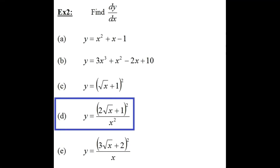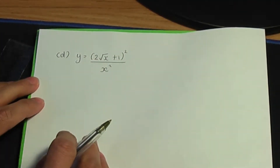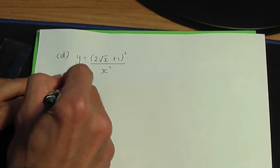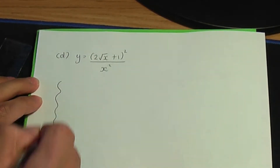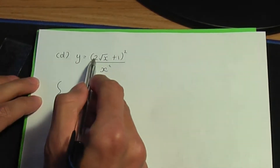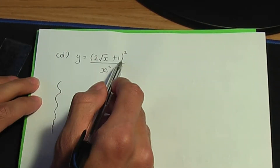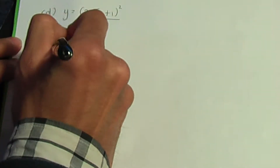Let me show you how to differentiate (2√x + 1)² divided by x². Back to the paper and pen. So let's differentiate this function. What I'm going to do first is a side calculation — let's multiply out the top term, so let's expand the numerator.